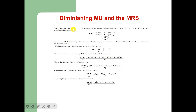Formally, suppose the utility function f(u) is any arbitrary order-preserving transformation of u, that is f'(u) > 0. Then for the transformed utility function, the marginal rate of substitution equals (∂f/∂x) / (∂f/∂y), which equals f'(u)·(∂u/∂x) / [f'(u)·(∂u/∂y)], which reduces to the ratio of marginal utility of x to marginal utility of y. The f'(u) terms cancel, showing that the MRS is independent of how utility is measured.